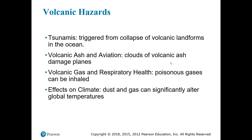Some of the ash you can breathe in has very jagged edges under a microscope — very small particles that can actually cut your lungs from the inside. A significant amount of ash released into the atmosphere can alter global temperatures on a short-term scale by blocking sunlight across the globe as that ash cloud travels and spreads, having the effect of lowering Earth's temperature.